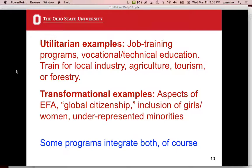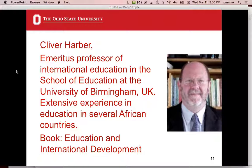Utilitarian examples of education include job training programs, vocational and technical education, training for local industry, agriculture, tourism, and forestry. Transformational examples include many aspects of Education for All — if you review those goals, a lot were about inclusion of girls and women, and minorities. Global citizenship under the Global Education First Initiative is also transformational. Both trends tend to fight against each other, though many programs have elements of both.